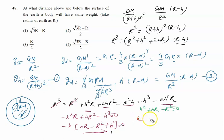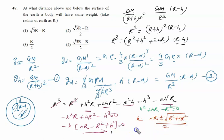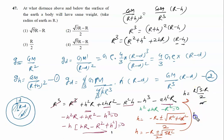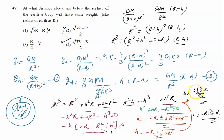Solving the quadratic h squared plus hR minus R squared equals zero using the quadratic formula: h equals minus R plus or minus root of (R squared plus 4R squared) upon 2, which gives h equals minus R plus or minus R root 5 upon 2. The two solutions are h equals (R root 5 minus R) upon 2, and h equals (minus R root 5 minus R) upon 2. Checking the options, option 4, which is (R root 5 minus R) upon 2, is the correct answer.